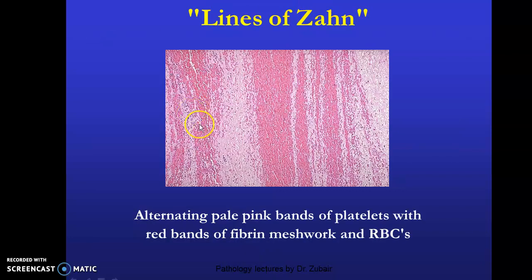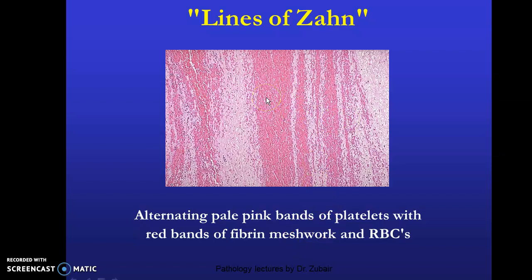The same appearance can be seen in microscopy as alternating pink bands of platelets with red bands of fibrin. Here you can identify the fibrin and the platelets within the thrombus on histological section.